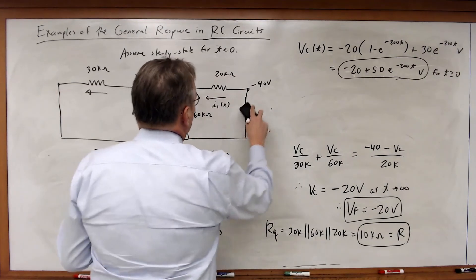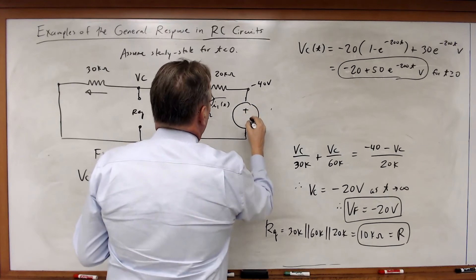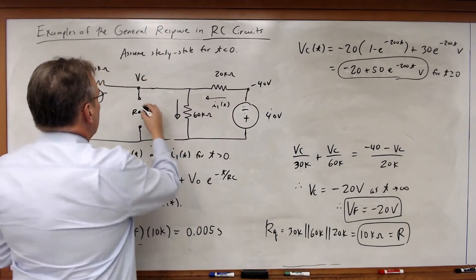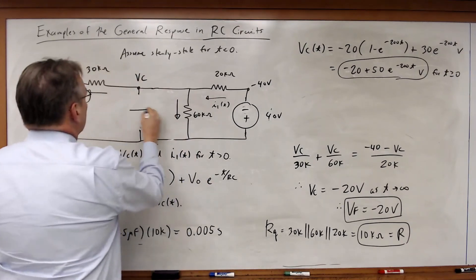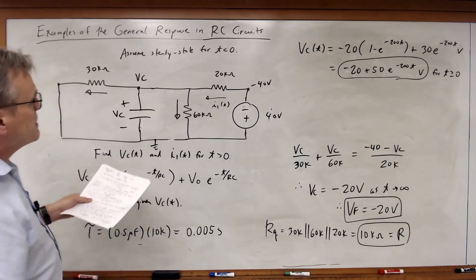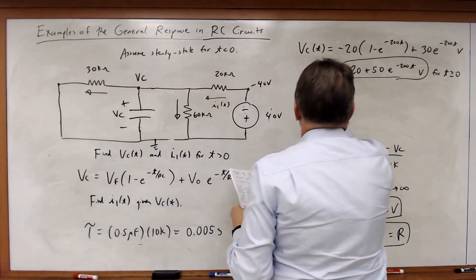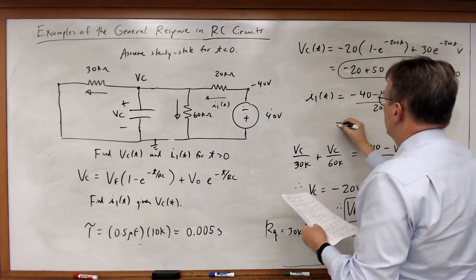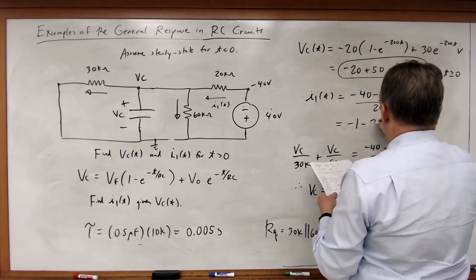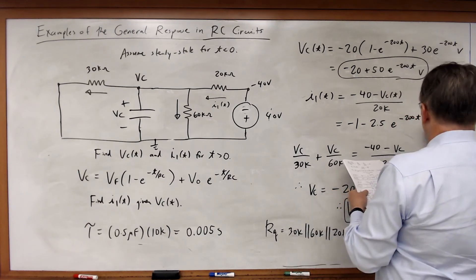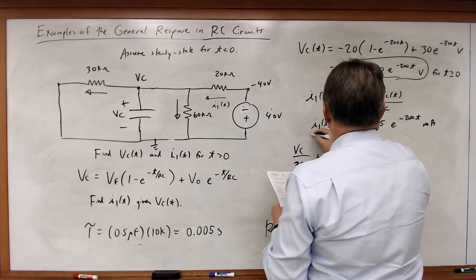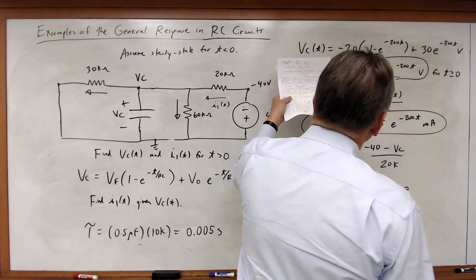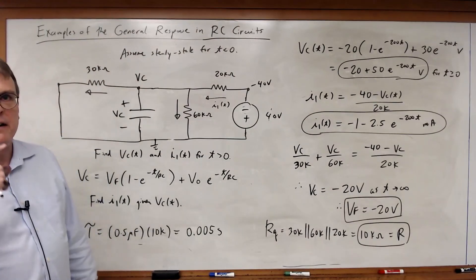What about I1? Putting the circuit back, I have minus 40 volts from the source and VC across the capacitor. Since I know VC, I1(t) equals (minus 40 minus VC(t)) divided by 20k, which gives I1(t) equal to minus 1 minus 2.5 times e to the minus 200t milliamps. So here are my voltage and current for t greater than zero. I solved for the voltage across the capacitor first, then solved for I1 given that value of VC — I did not apply the general solution directly to I1.